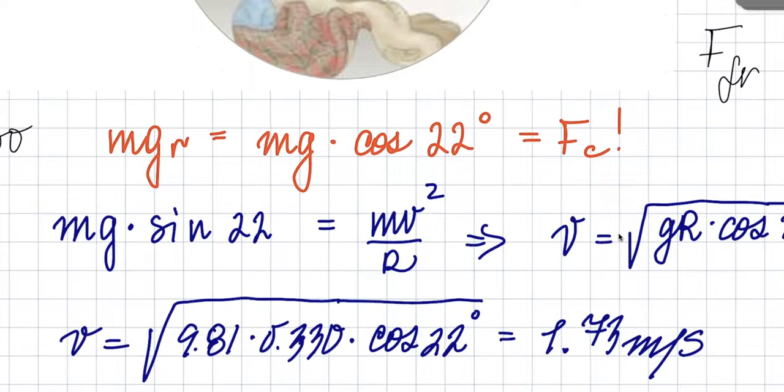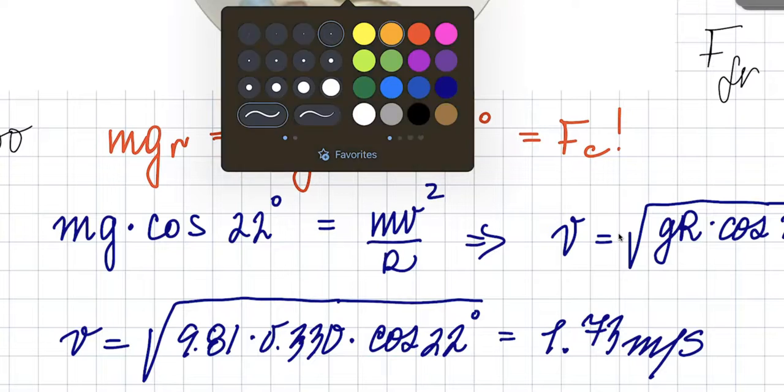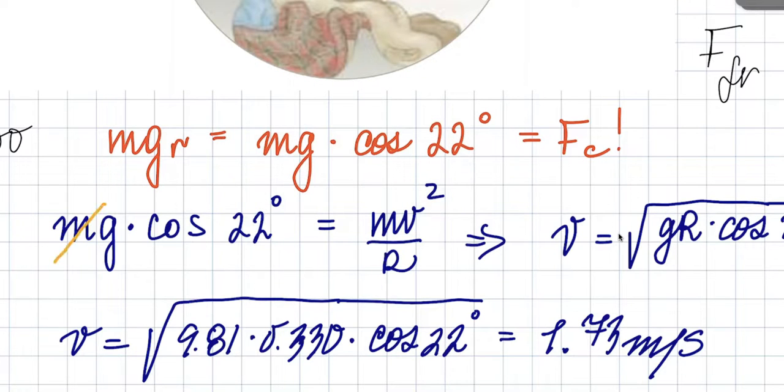So then, MGR cosine of 22 degrees will be your centripetal force. Then M goes, again mass, and they didn't even bother giving us the mass of that piece, because it's not going to, that's usually how you know. When you think, well I cannot solve it because I don't know mass, that means that mass will eventually cancel, so don't worry about it.